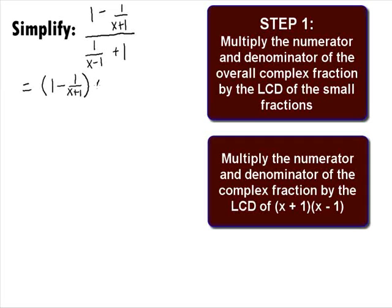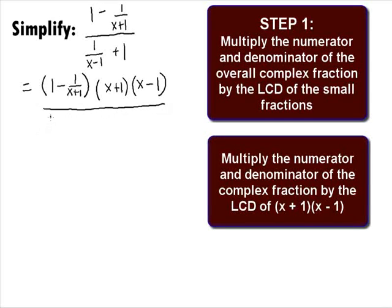In the numerator, we will have 1 minus 1 over x plus 1, times x plus 1 times x minus 1. In the denominator, we'll have 1 over x minus 1 plus 1, times that same x plus 1 times x minus 1.